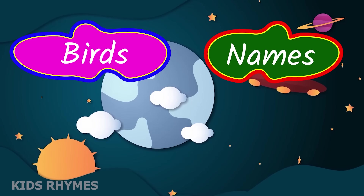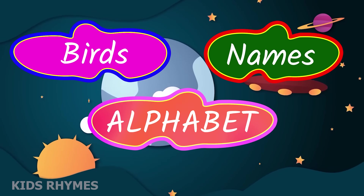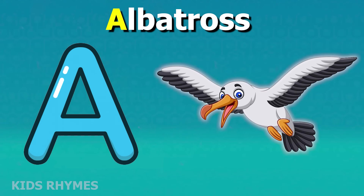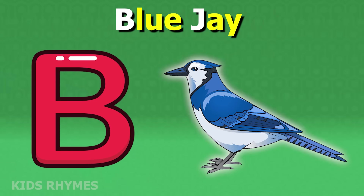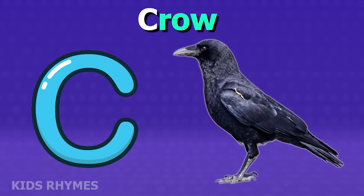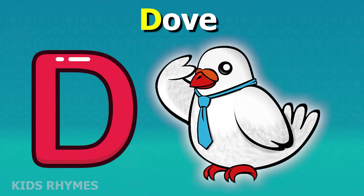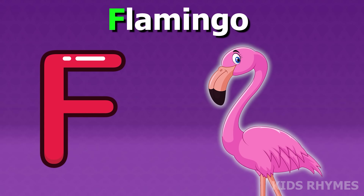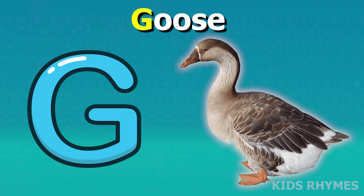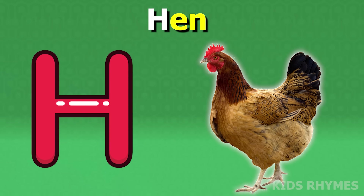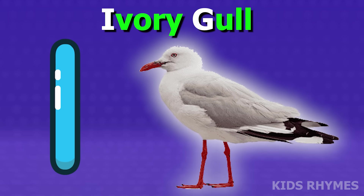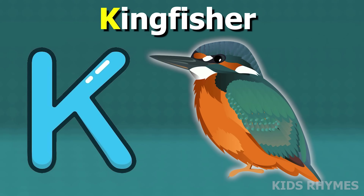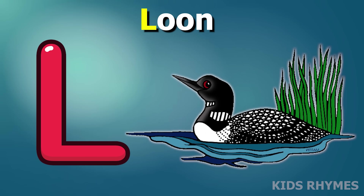Bird's name according to alphabet: A for albatross, B for blue jay, C for crow, D for dove, E for eagle, F for flamingo, G for goose, H for hen, I for ibis, J for jay, K for kingfisher, L for loon.